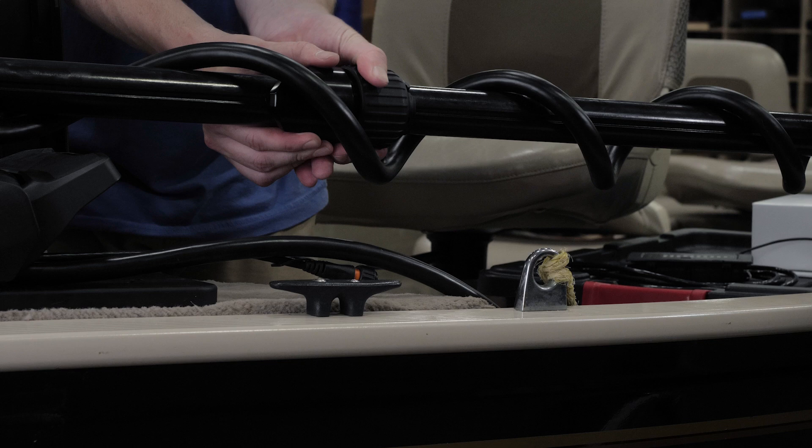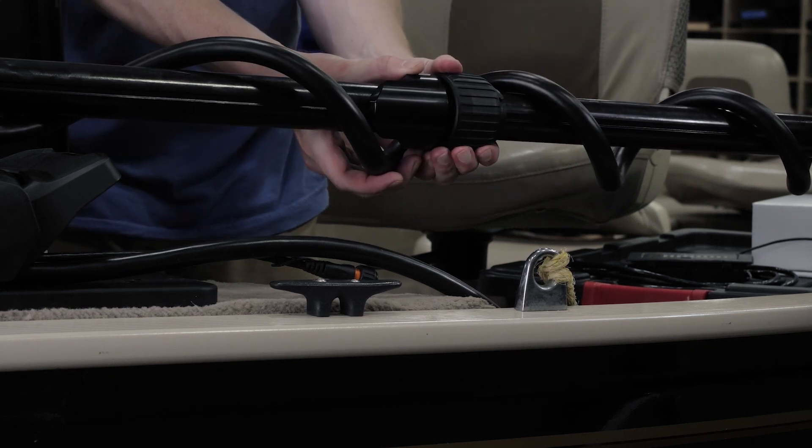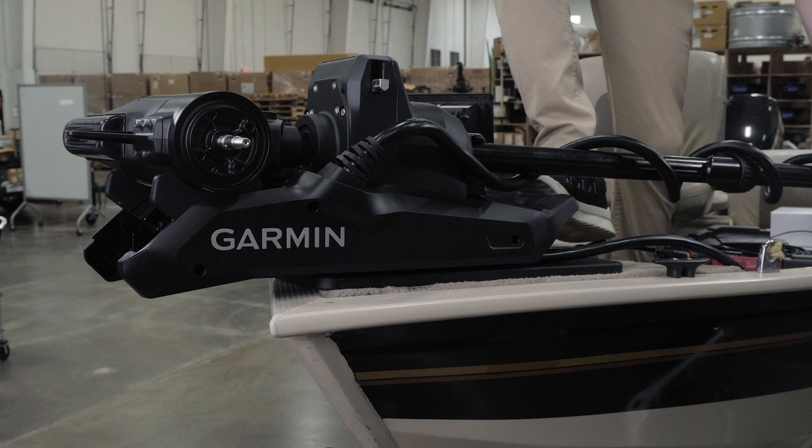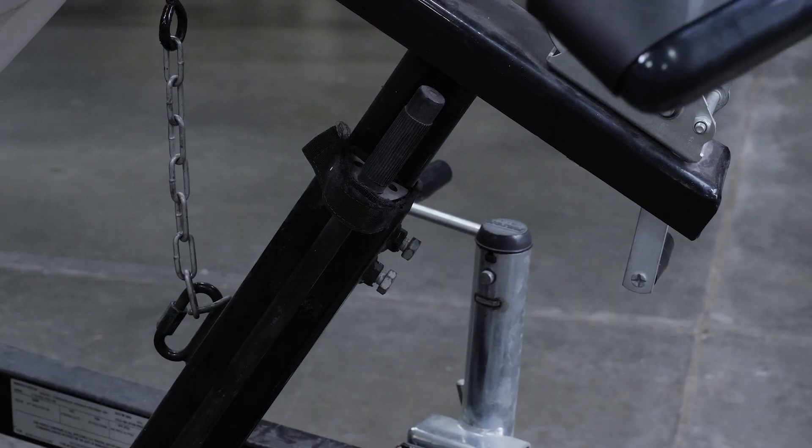Adjust the depth stop so that the motor can deploy without hitting the ground. Press the release and slide the propeller drive motor head out and pivot the trolling motor into the deployed position.